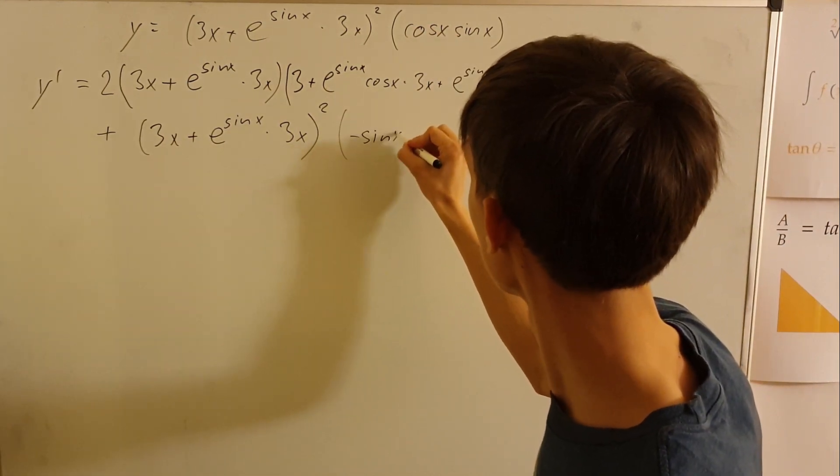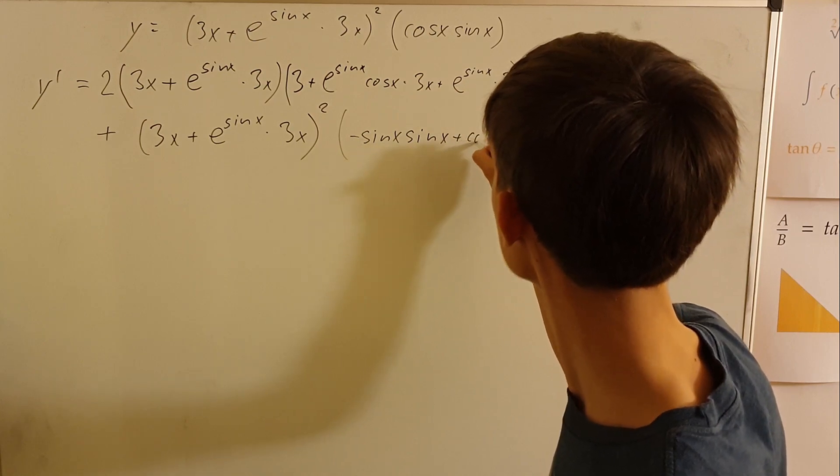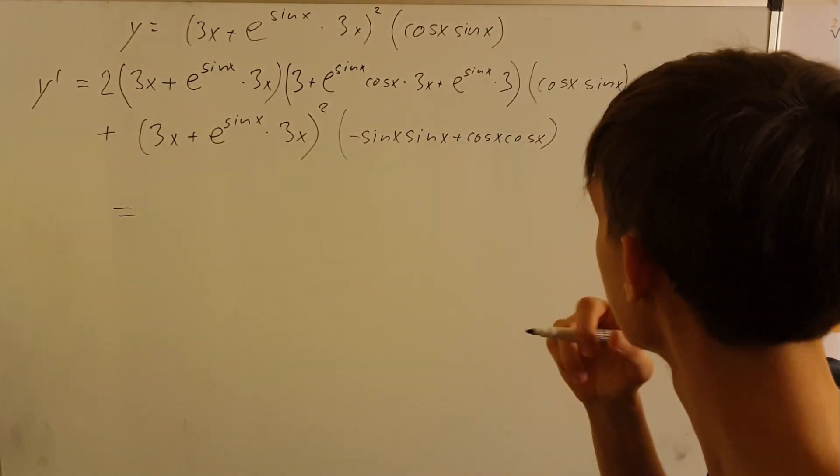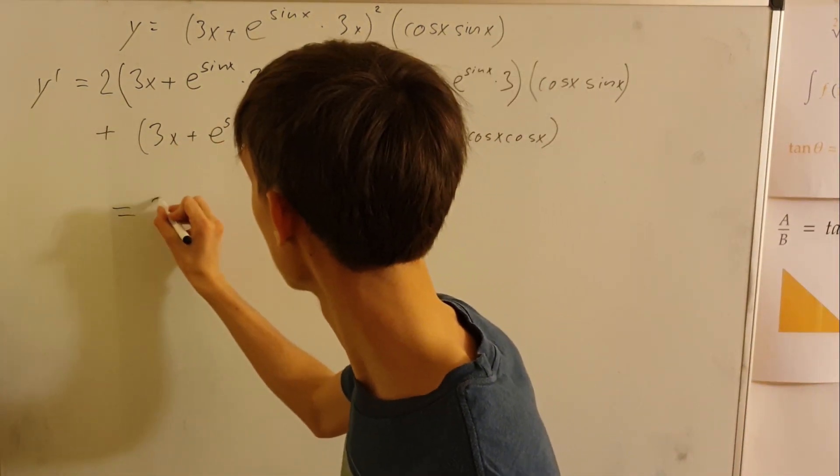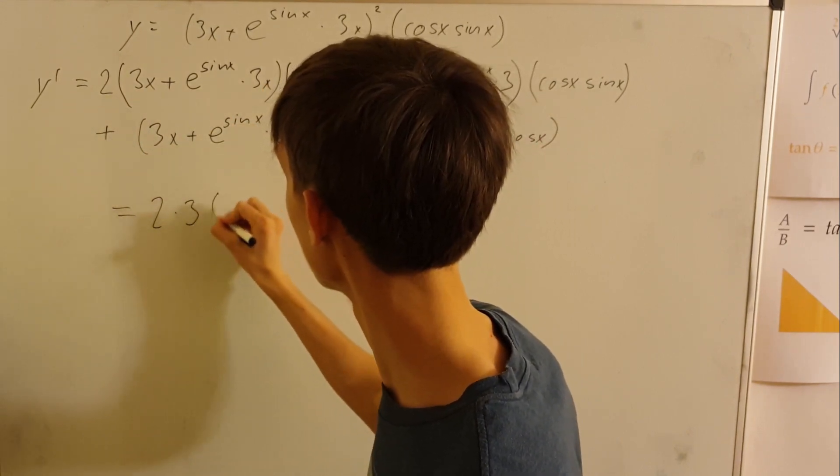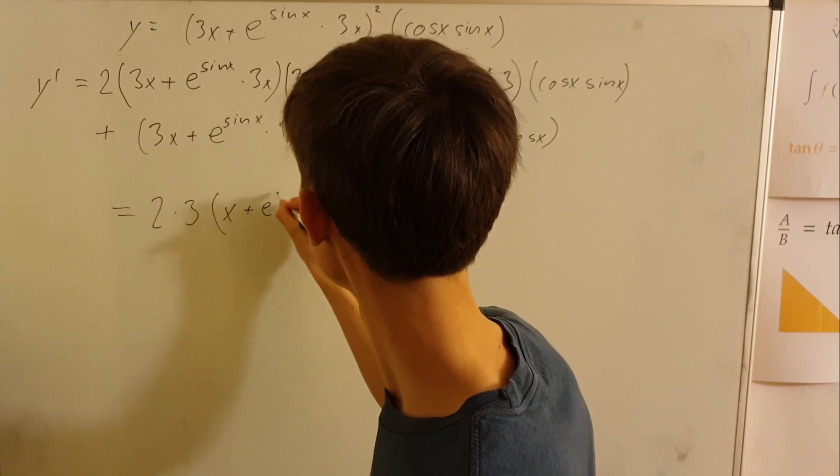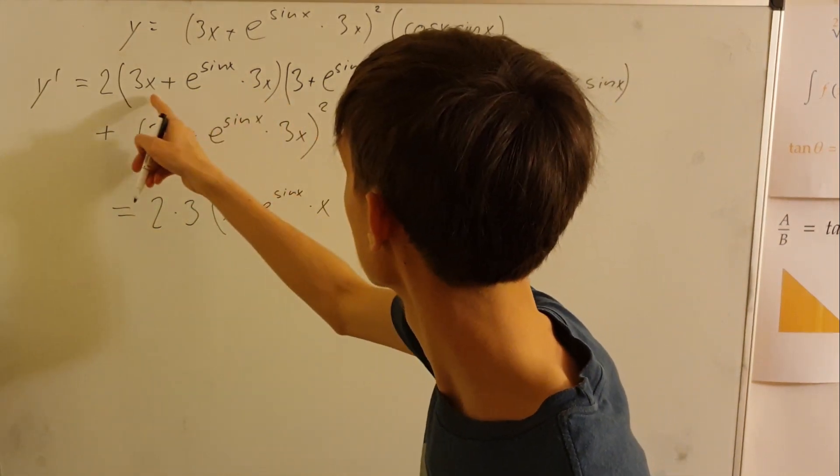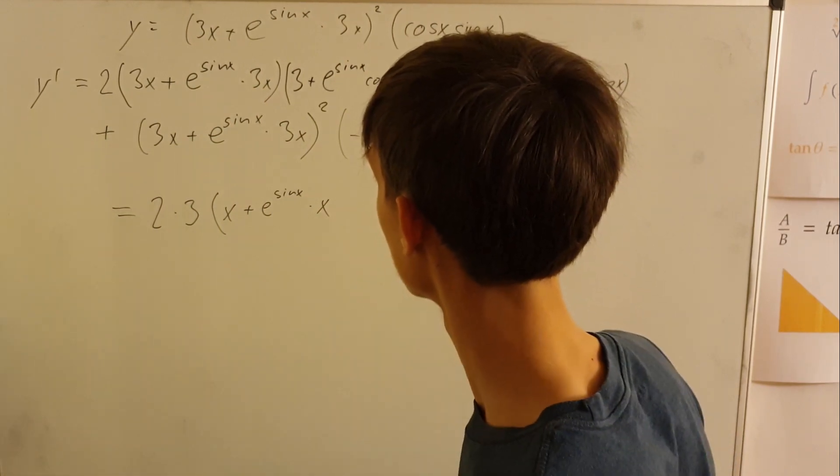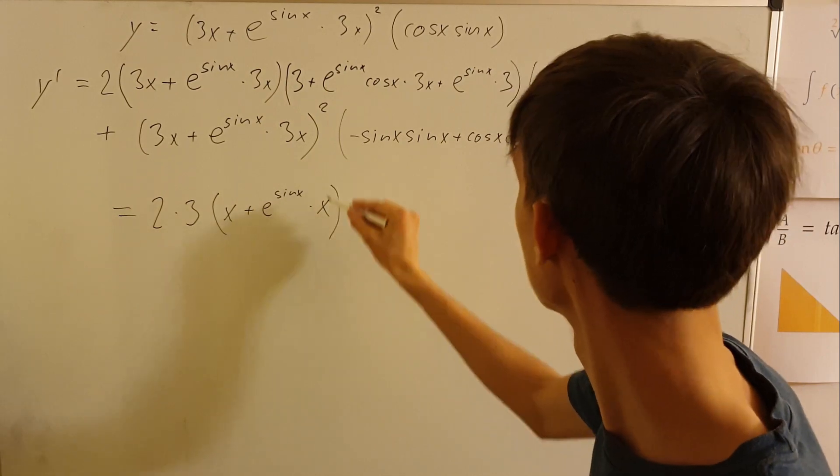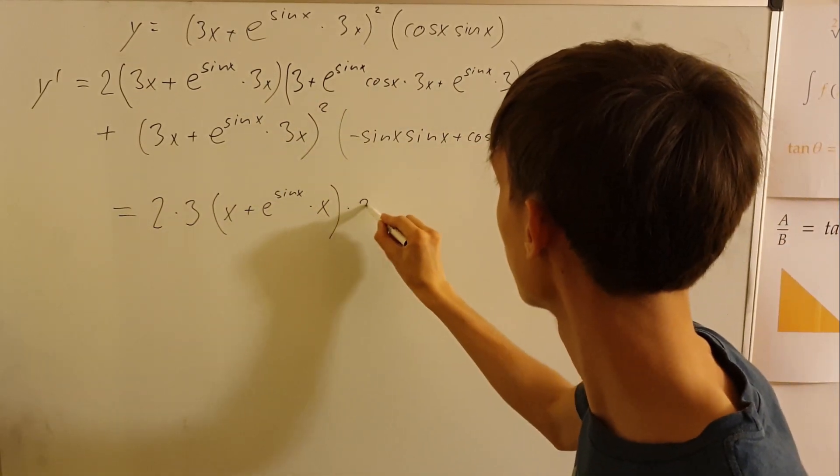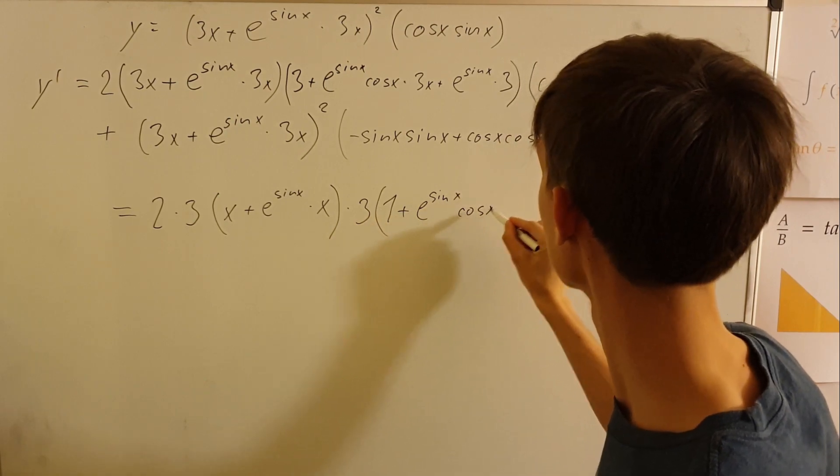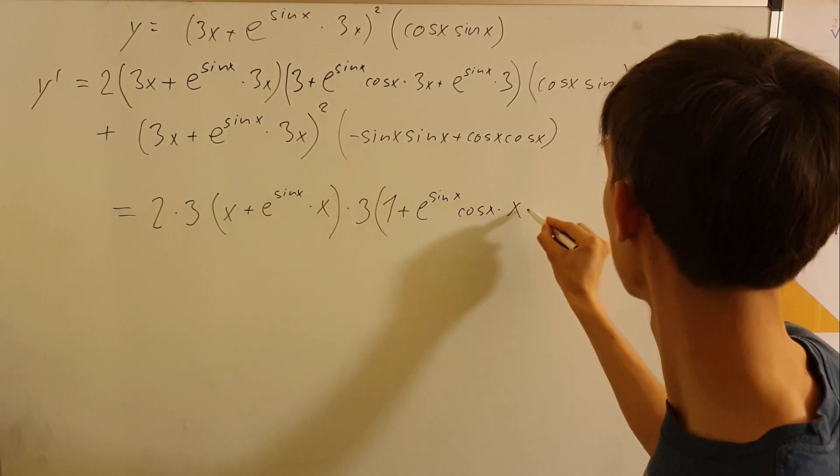one which will be sine x sine x plus cosine x cosine x. And now we can maybe get out some numbers here so we can do two times, and now we can get out the three. Two times 3x plus e to sin x times x. It looks like we also could get the x out so then we can do another three and get it out of here.